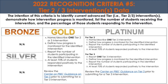Identify current advanced tier interventions. Criteria 5 is only required if your school is applying for gold or platinum recognition. For this item, a school must report details on their advanced tier interventions. Please read the Criteria at a Glance document for further details.